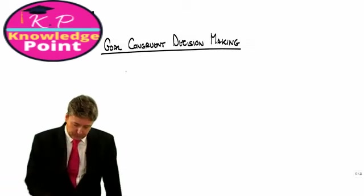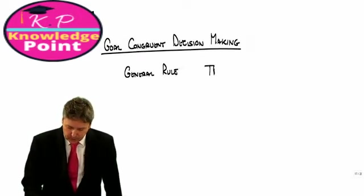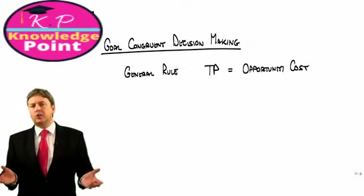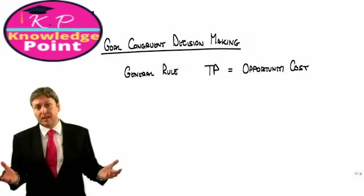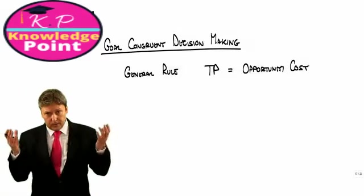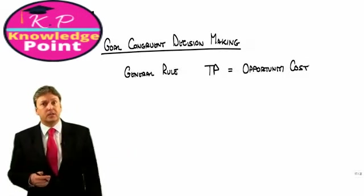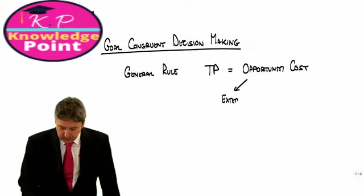There's a very simple rule. The general rule in goal-congruent decision-making is that the transfer price equals the opportunity cost of that transaction, the opportunity cost to both parties. The opportunity cost will differ depending on the circumstances of the trade. For example, if there is an external market for the good that is being transferred internally, the opportunity cost could simply be the external market price.